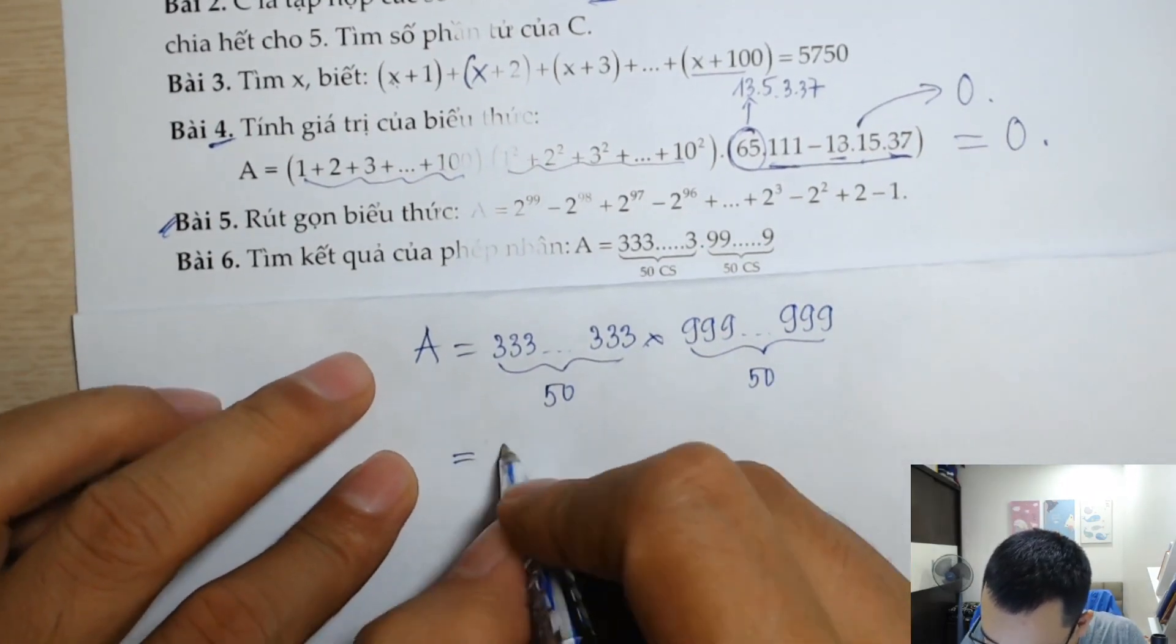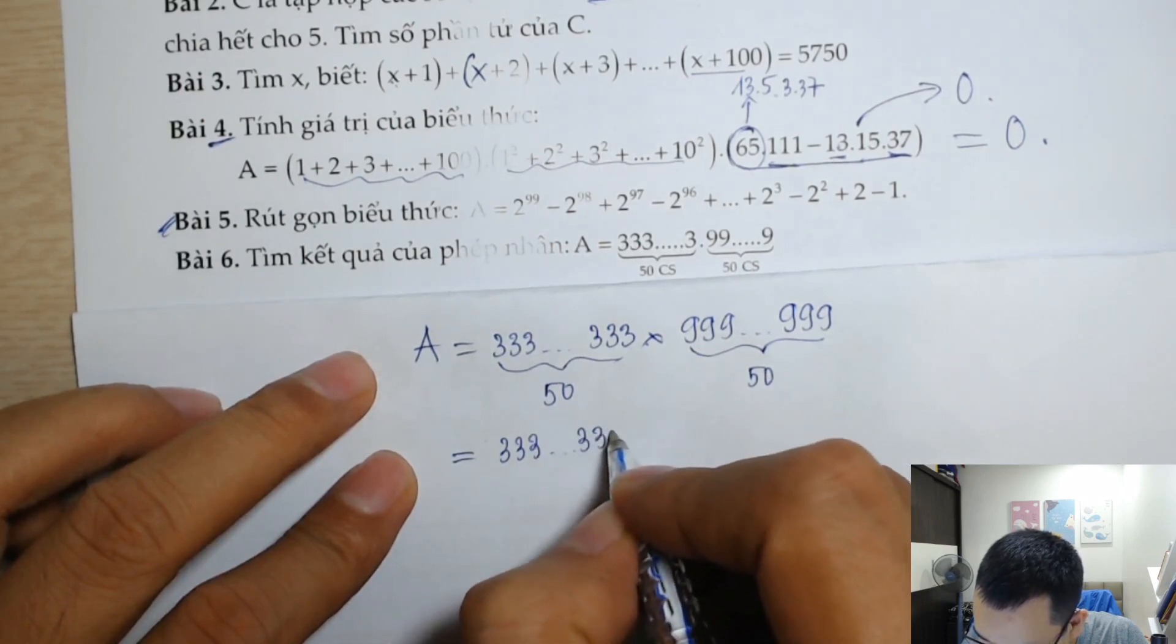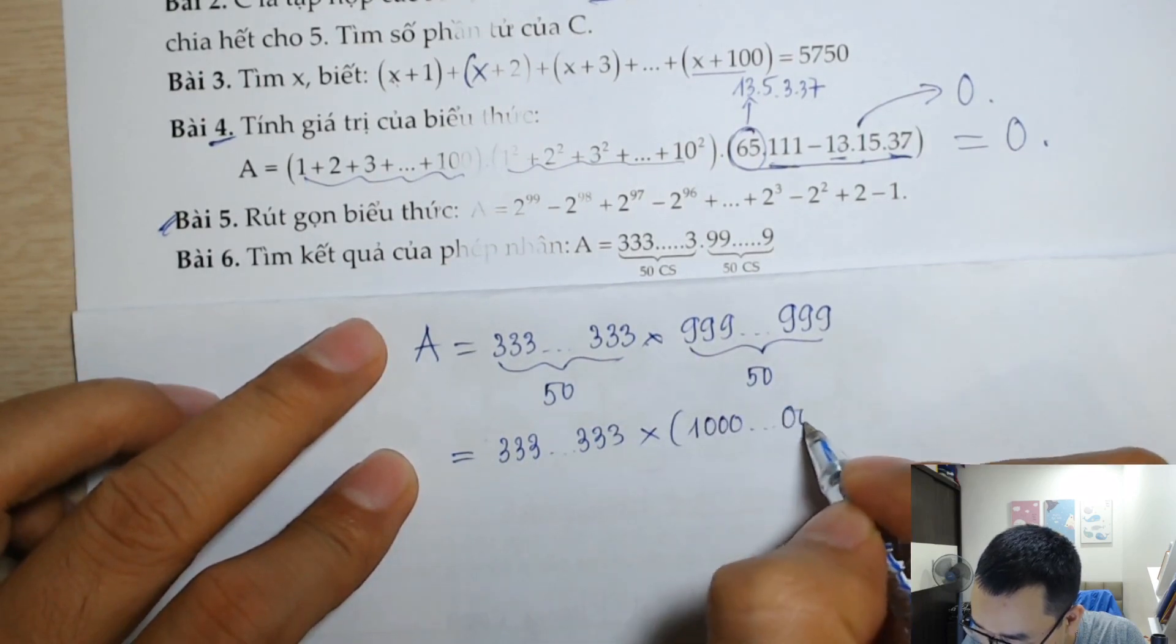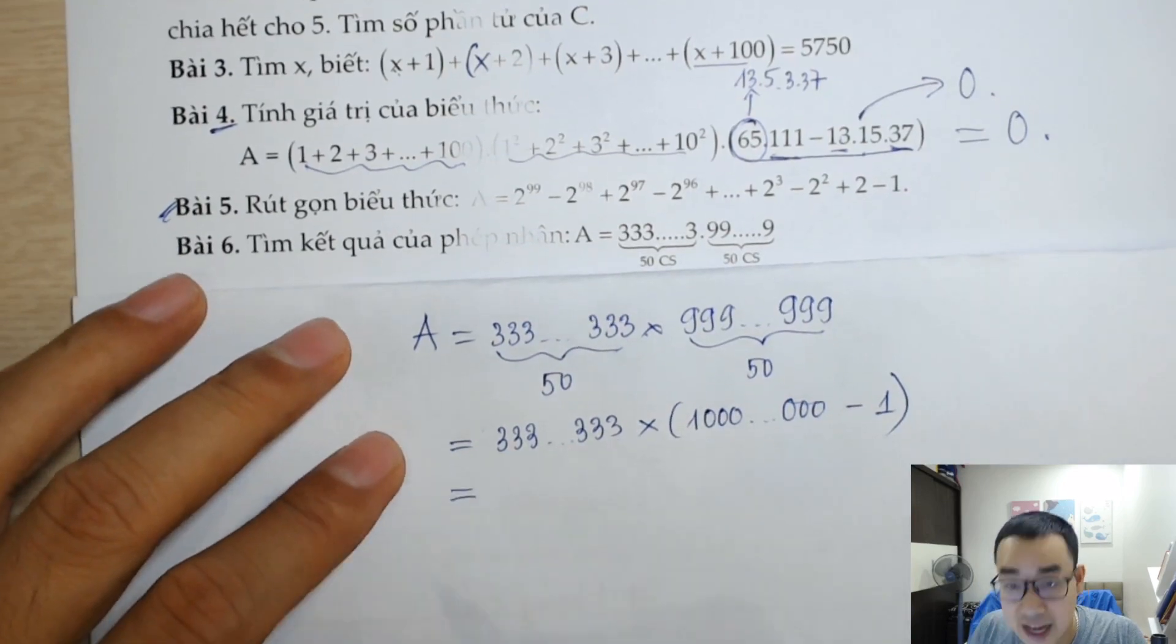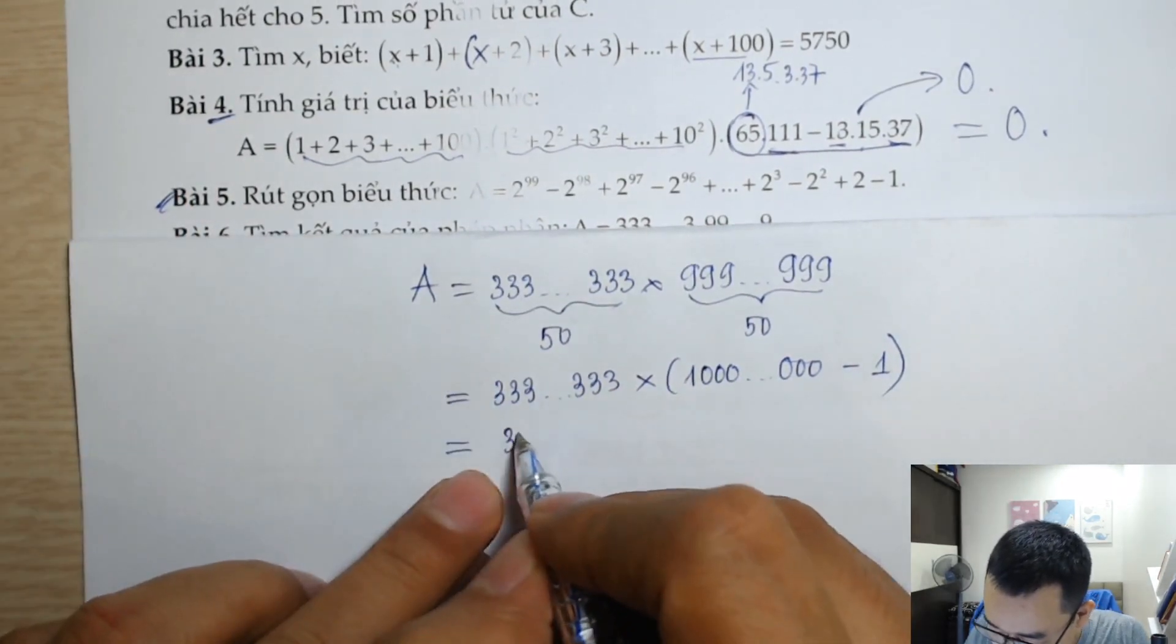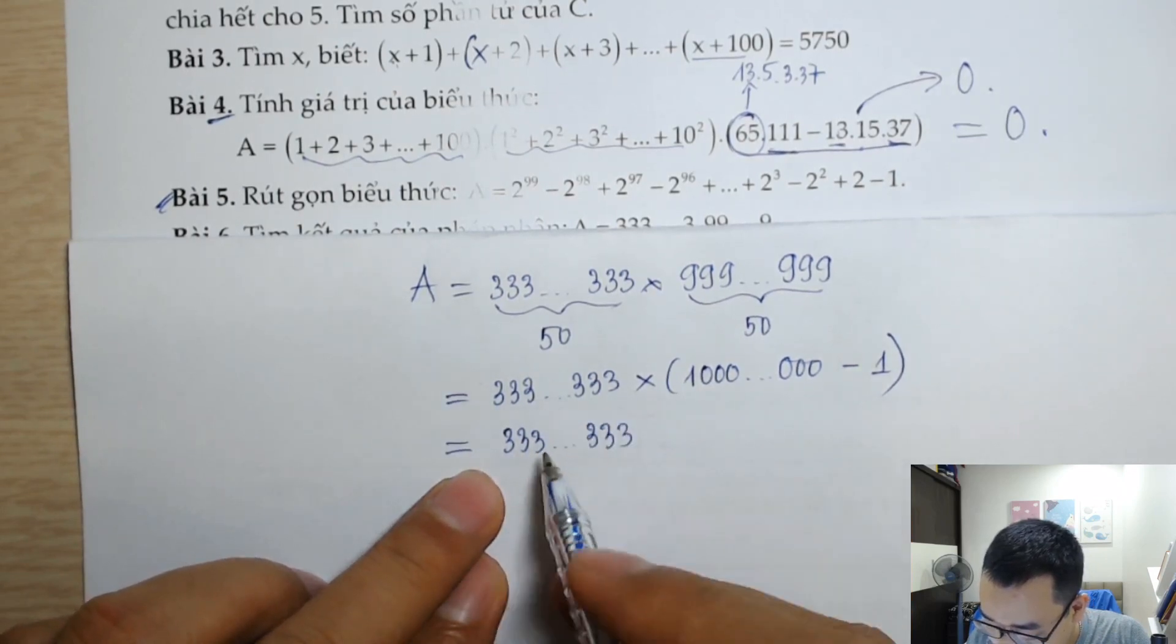Như vậy thầy sẽ tách cái này ra thành là 333...333, nhân, 1000...000. Đó, và điều gì? Chúng ta sẽ thấy là 333...333, chỗ này 50 chữ số 3.